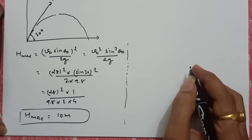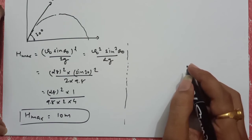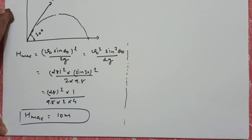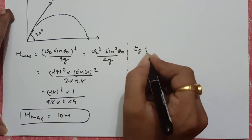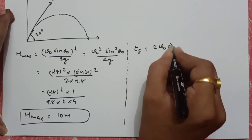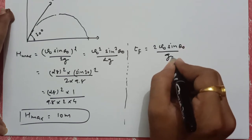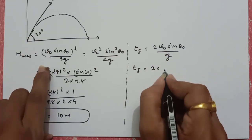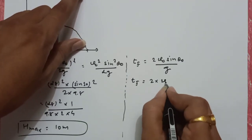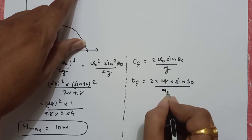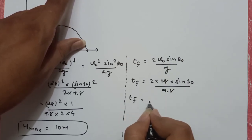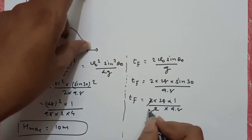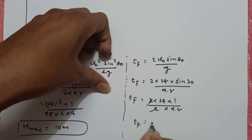दूसरा क्या find करना है: the time taken by ball to return to the same level — मतलब वापिस same level, ground पे ही आने के लिए कितना time लगेगा, मतलब हमें find करना है time of flight. So time of flight का formula: 2V0 sine theta0 by G. So time of flight is equal to 2 into 28 into sine 30 by G 9.8. Sine 30 की जगा 1/2 रख दो: 2 into 28 into 1/2, and 9.8 as it is. So you will get the answer: time of flight will be 2.9 seconds।